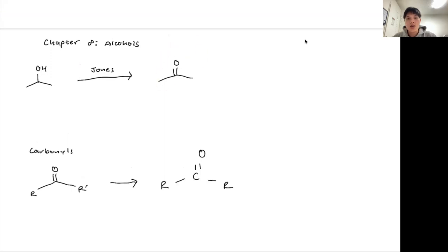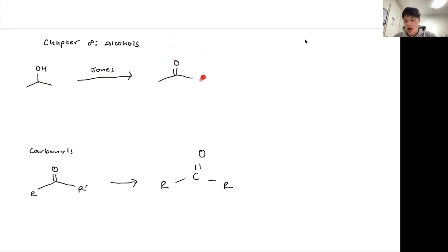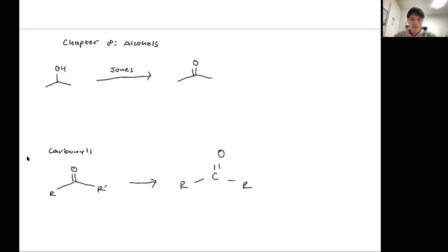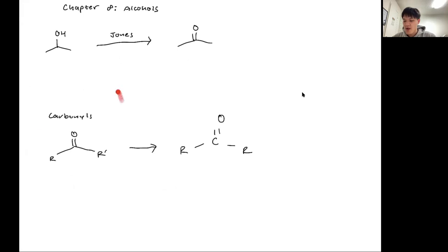This ketone can be made by oxidizing a secondary alcohol using Jones or PCC - whichever one you want to use - but you do need to use an oxidizing agent. As this reduces, it turns into a ketone, and then we have this carbonyl compound that we can do some chemistry with. Let's go through their appearance and structure first.